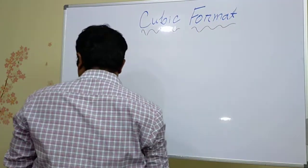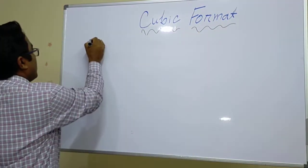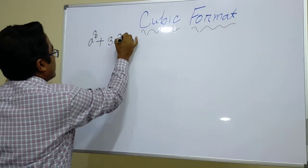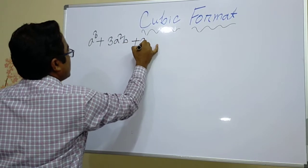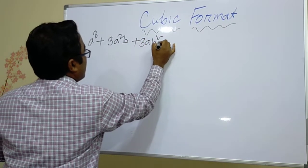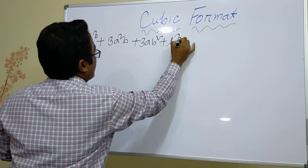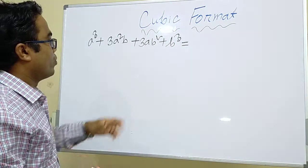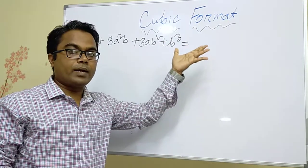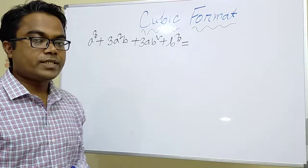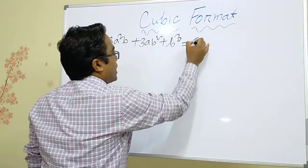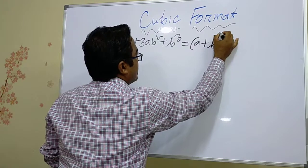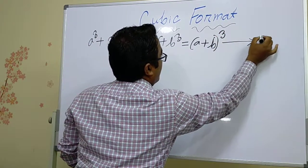Cubic format. Here, a cube plus 3a squared b plus 3ab squared plus b cube equals — this is the formula for (a + b) whole cube. So we can write (a + b) whole cube. This is equation number 1.